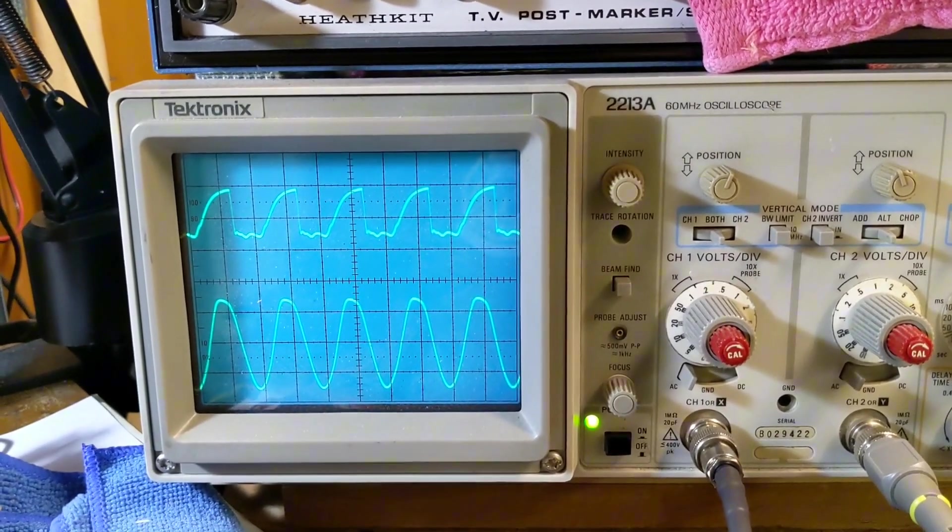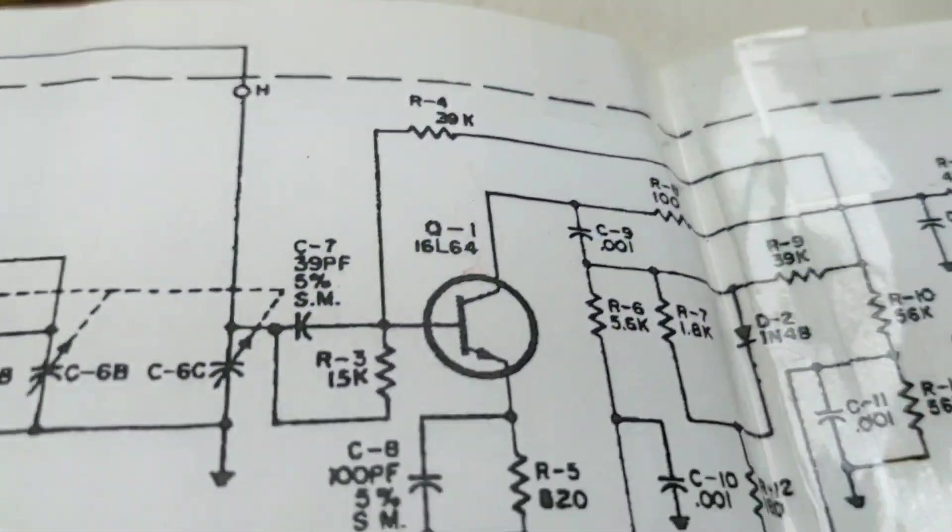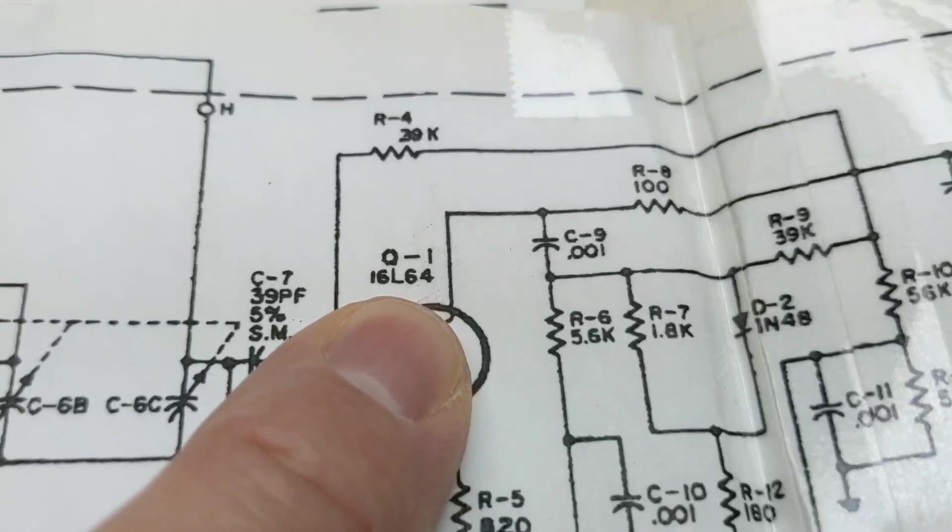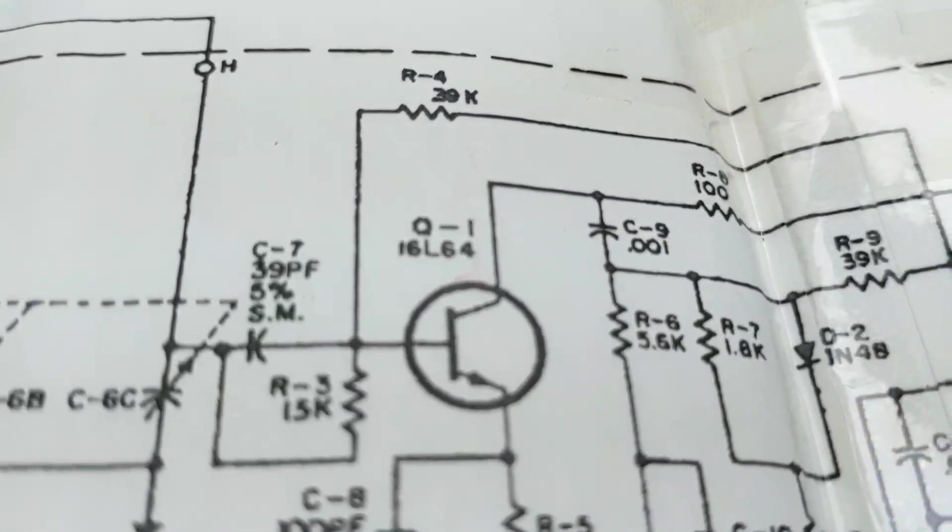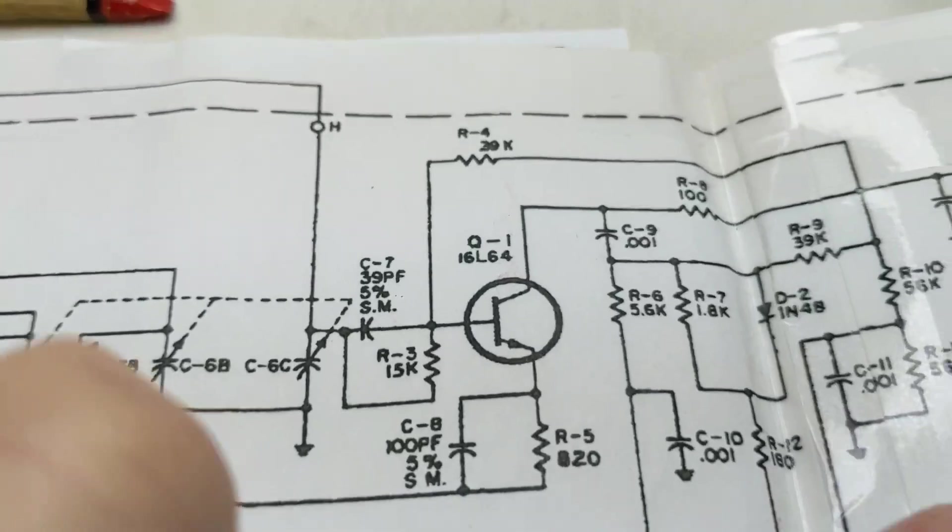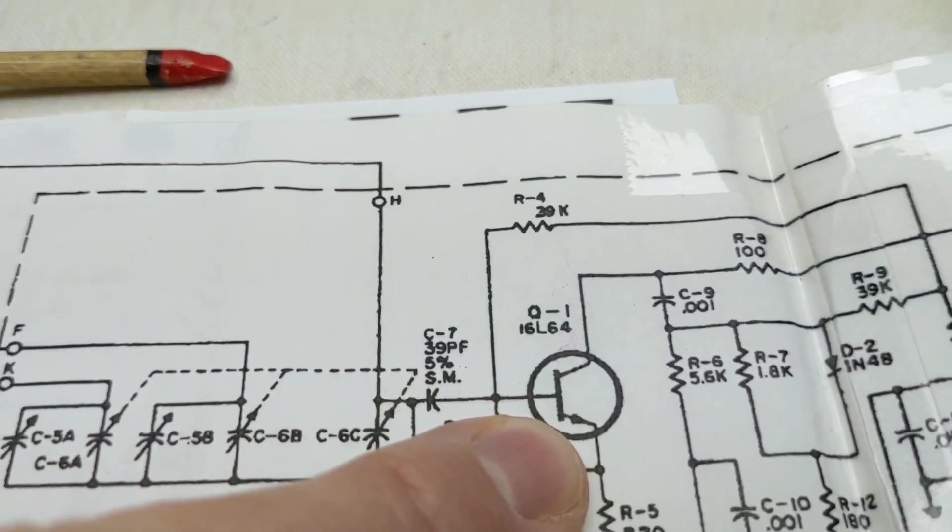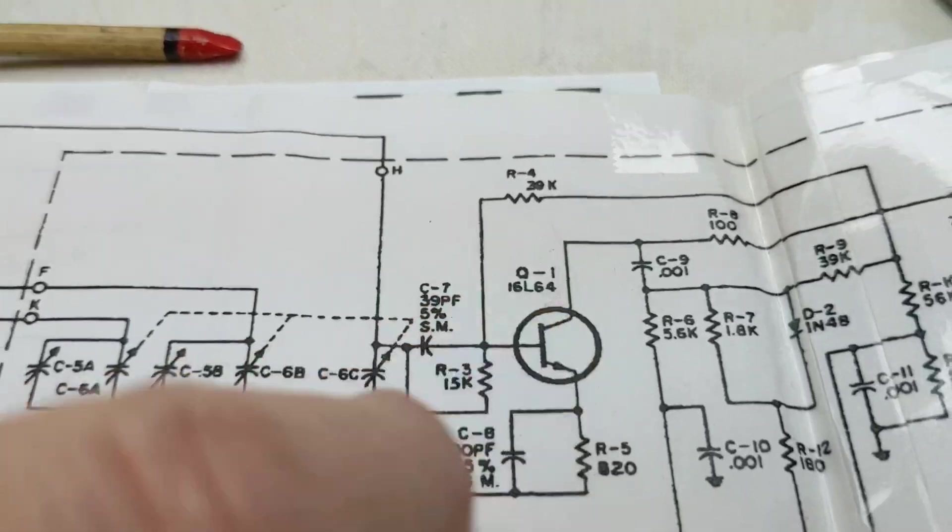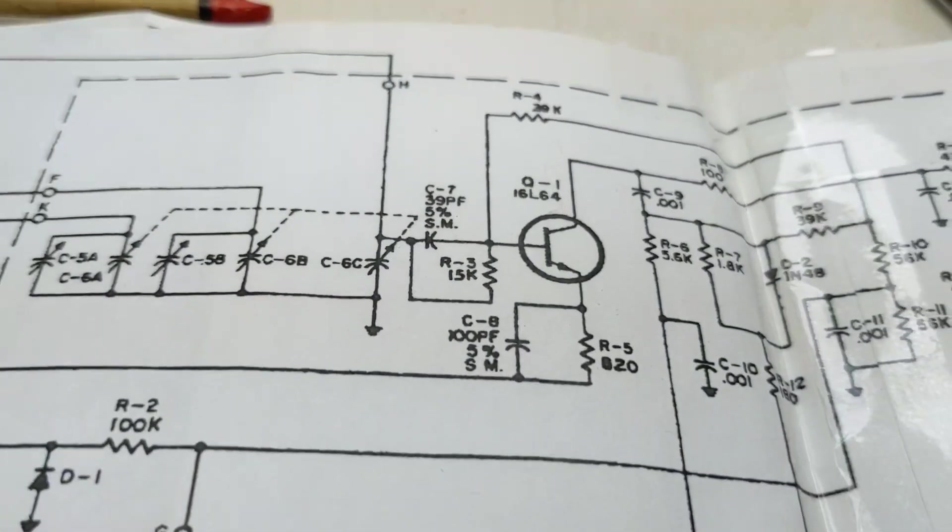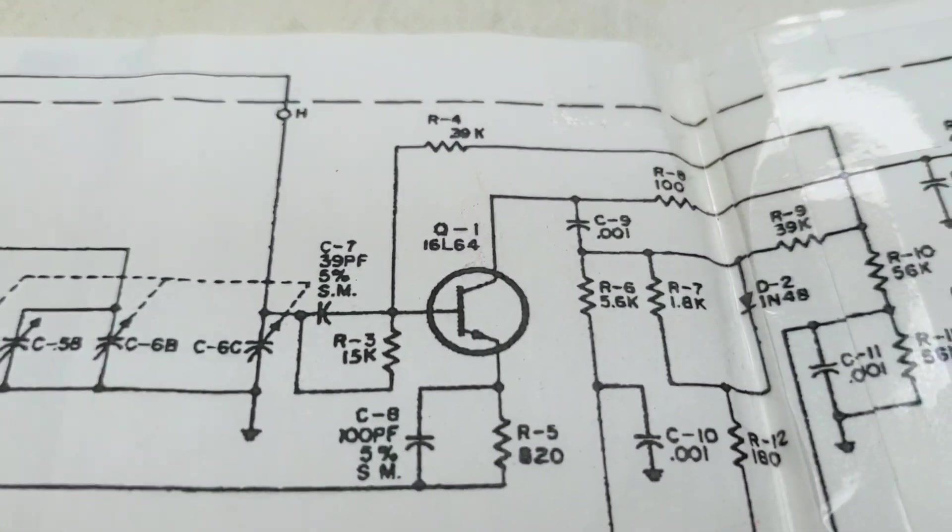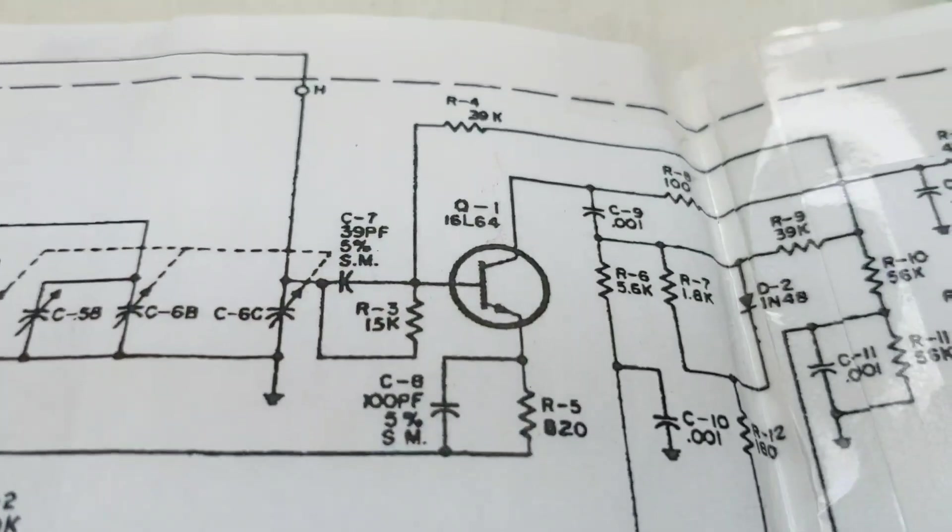So let me see what transistor it is. So I come over to the schematic and I look at this and it says 16 L64. I'm like, okay, 16 L64. I have no clue what a 16 L64 is other than it being, where the heck's my finger? Other than it being an NPN. So I don't know what to replace it with. I try to find a 16 L64 on the internet. I look, Mauser, DigiKey, Newark Supply. I can't find the 16 L64. So I don't know what the specs are on this transistor.